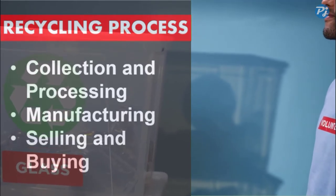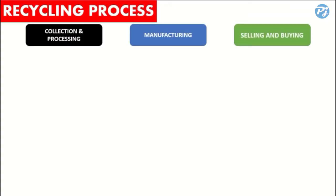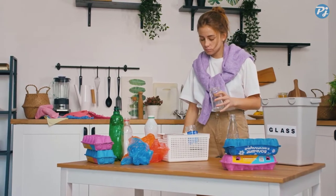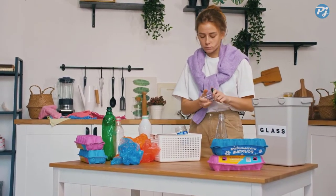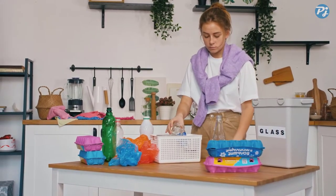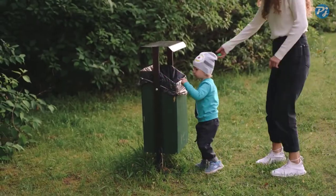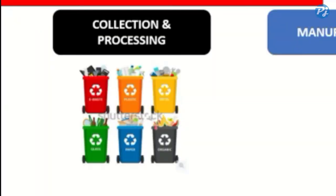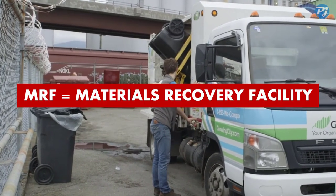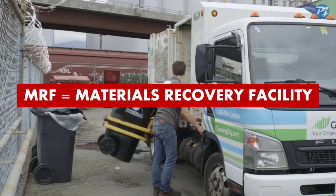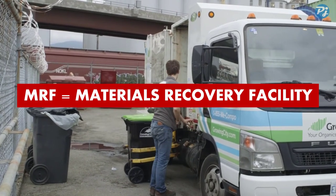Let's start with Collection and Processing. In this step, wastes from homes, factories, business establishments, and other institutions are segregated into recyclables and non-recyclables. The non-recyclables go to the landfills. The recyclables are sorted into different kinds and collected through the school MRF, barangay MRF, and municipal/city MRF. MRF stands for Material Recovery Facility.